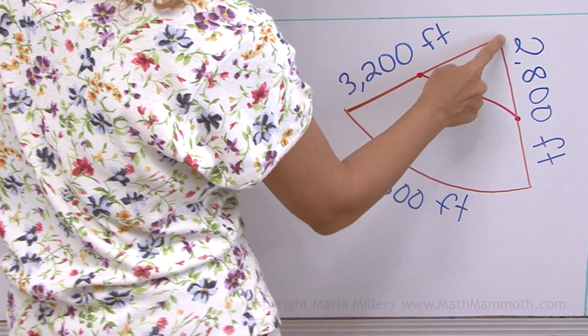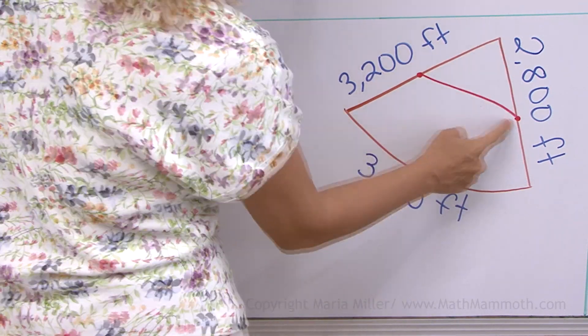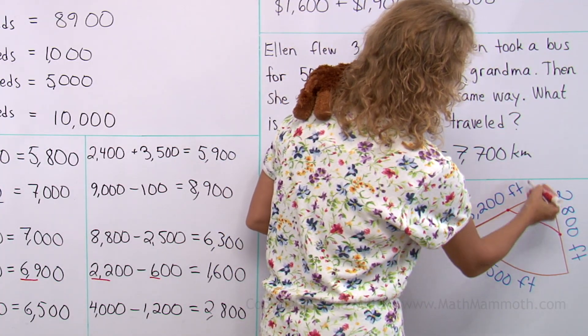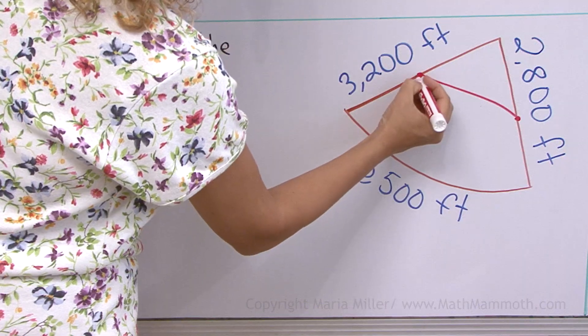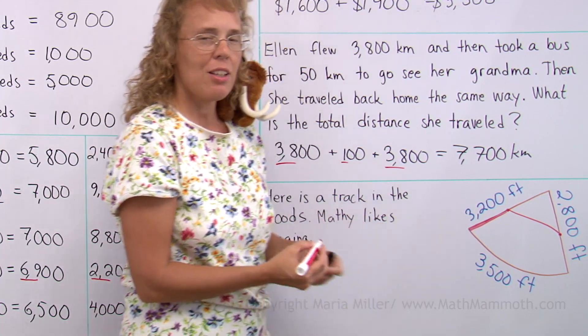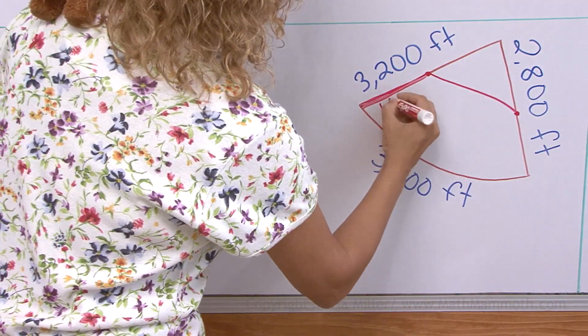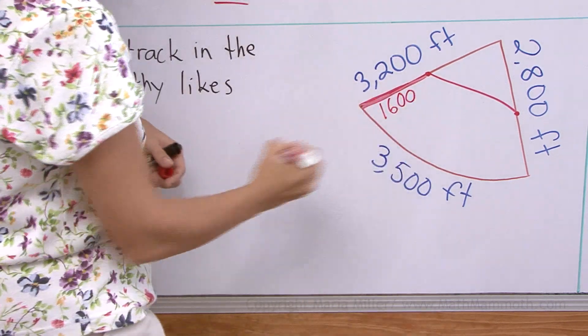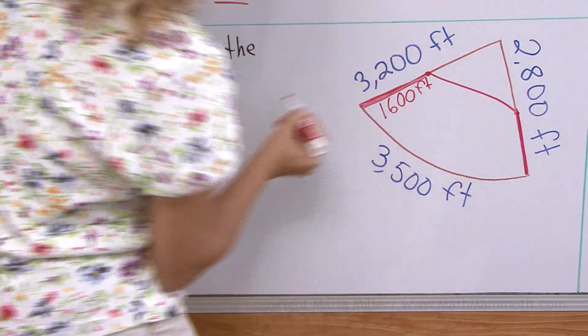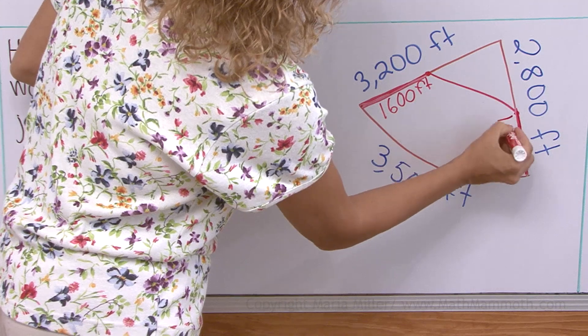Let's say this is exactly halfway here, on this side. And this is exactly in the halfway point here. So 3,200. But if he just goes half of that, how long is this part here? Think of 32. What's half of 32? 16. So it's 1,600 feet. And this one here, this would be half of that, 1,400 feet. But Matti, we have a problem. We don't know this distance.